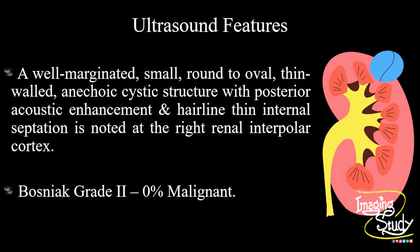In summary, a well-marginated, small, round-to-oval, thin-walled, anechoic cystic structure with posterior acoustic enhancement and hairline thin internal septation is noted at the interpolar right renal cortical region. These features go in favor of Bosniak Grade II, which suggests no chance of malignancy in this case.